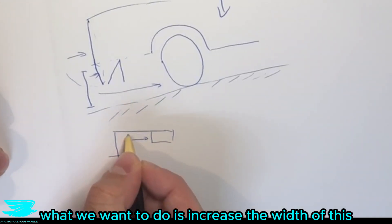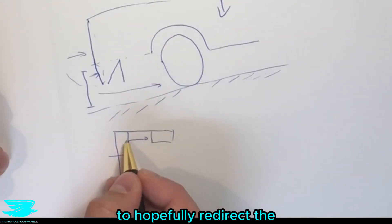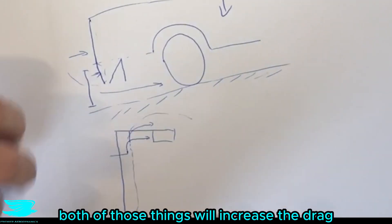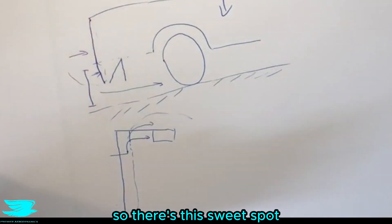What we want to do is increase the width of this at least to hopefully redirect the flow more around the wheels but not so much that we get a bigger wake happening around here. Both of those things will increase the drag so there's this sweet spot.